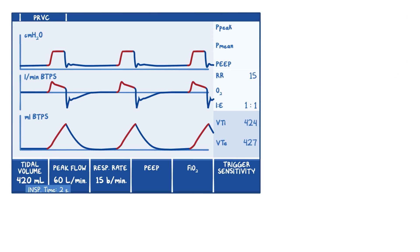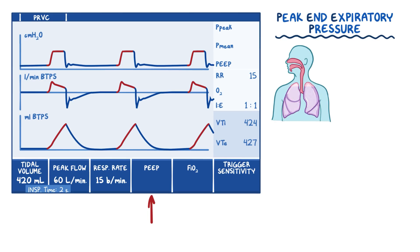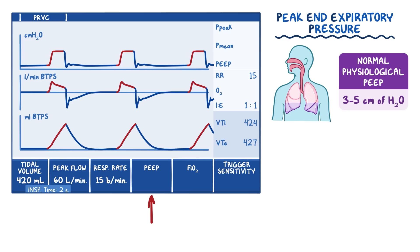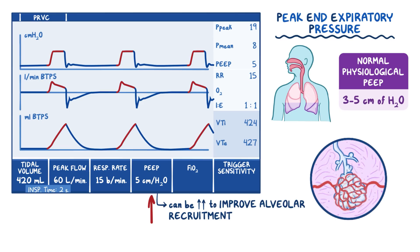Next, we'll select the level of peak end expiratory pressure, or PEEP, which is the volume of air that remains in the lungs after exhalation. Normal physiologic PEEP is 3 to 5 centimeters of H2O. So let's start there and program in a PEEP of 5 centimeters of H2O. This setting can be increased to improve alveolar recruitment, or open collapsed alveoli in patients with sick lungs and decreased lung compliance. As your patient's lungs get better, they'll be able to manage ventilation with lower end pressures. So an initial higher PEEP can be decreased gradually.